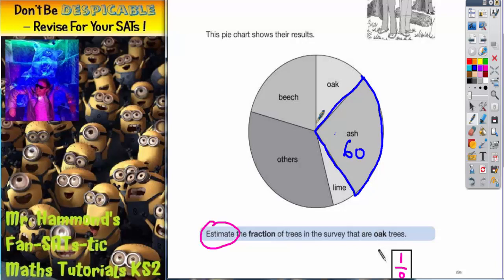Now what you might notice is that beech and oak together take up about the same number as ash. So these two together are going to be worth 60 together because it's about the same size.